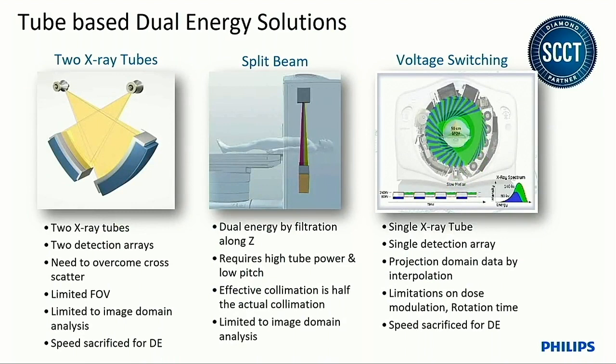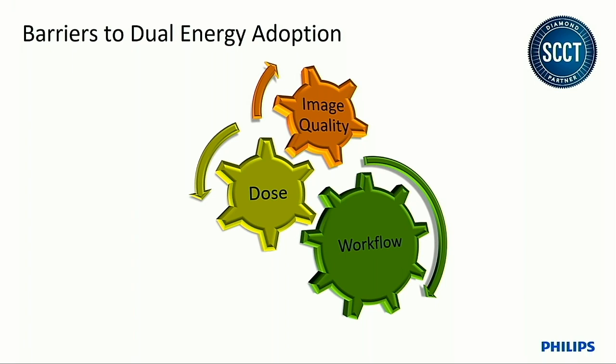With each of these approaches, you need to give up something — either conventional imaging or speed. The barriers to adoption in dual energy have been workflow, dose, and image quality. Workflow makes it much more difficult for both the technologist and radiologist in deciding whether to do dual energy and how to review the images. Dose is a concern since you are sampling the patient at two energies, and in some approaches you lose dose modulation tools. Image quality is challenging, particularly at lower mono-E images due to high noise.